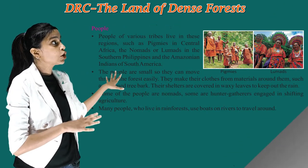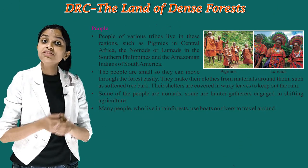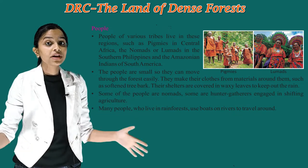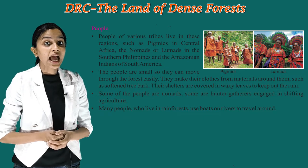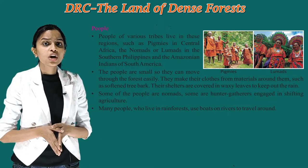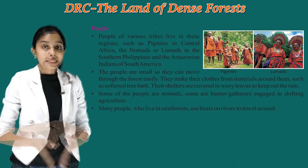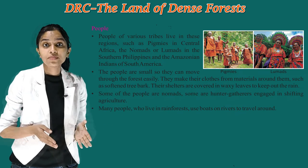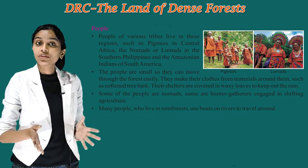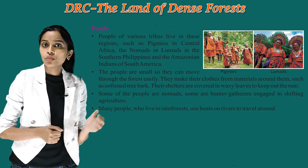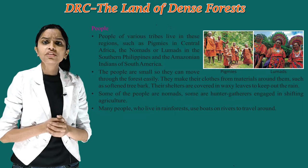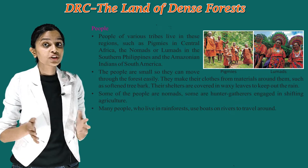Now let's see the people of this area. People of various tribes live in these regions, such as pygmies in central Africa, the nomads or lumens in the southern Philippines, and the Amazonian Indians of South America. The people are small so they can move through the forest easily. They make their clothes from materials around them such as softened tree bark. Their shelters are covered in large leaves to keep out the rain. Some of the people are nomads, and some are hunter gatherers engaged in shifting agriculture. Many people who live in the rainforest use boats on rivers to travel around.